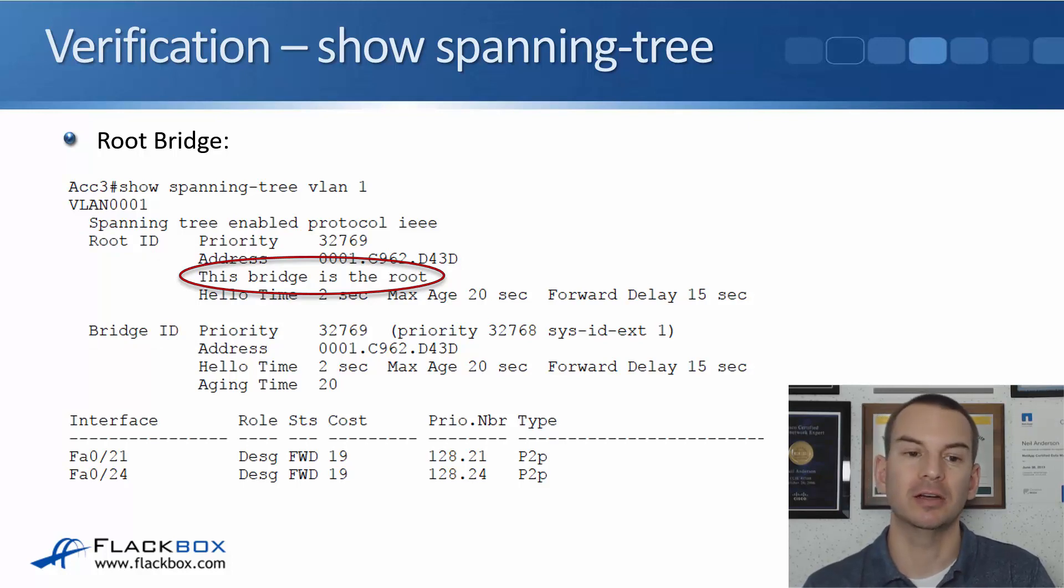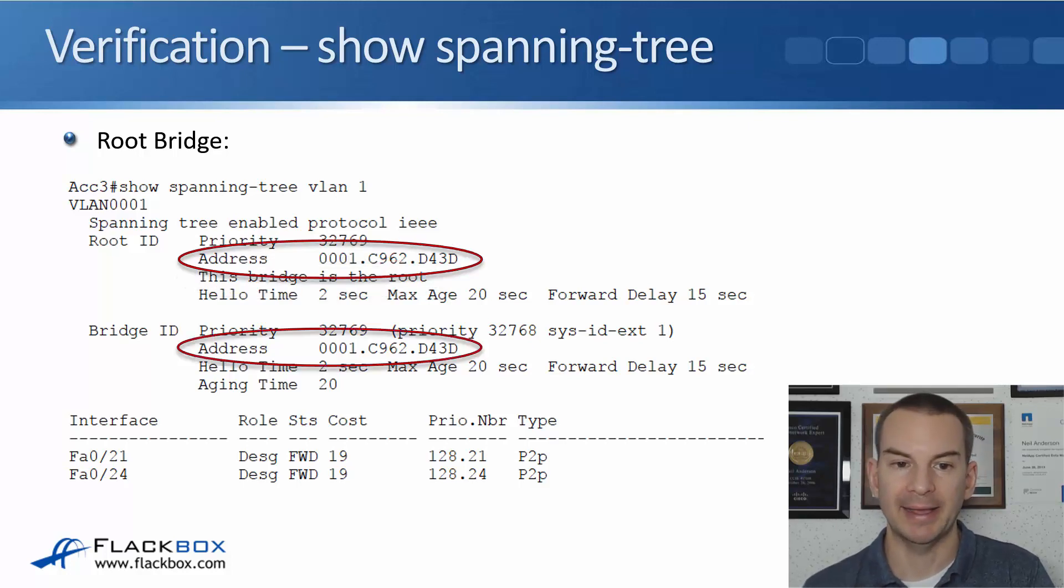The root ID gives you information about the root bridge. The bridge ID section gives you information about this switch. So the root ID information should be similar on all of the switches in your local area network. The bridge ID section will specify the MAC address for that individual switch. Next thing, we're on the root bridge here. We can see that very clearly. Under the root ID section, it tells us this bridge is the root. And that's why the MAC address is the same in the root ID section and in the bridge ID section, because this switch is the root bridge. And notice that for this example, the switch's MAC address ends in D43D. That's important when we look at the information coming up on the next switch we'll look at, which is a non-root bridge.